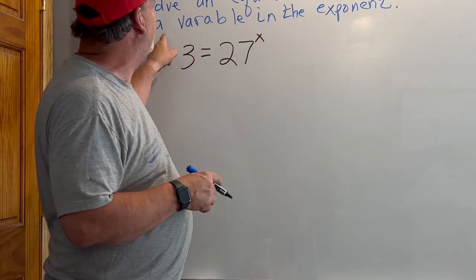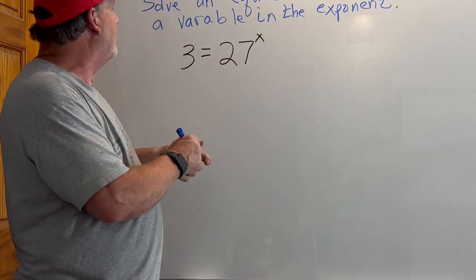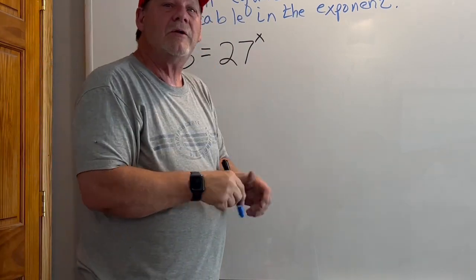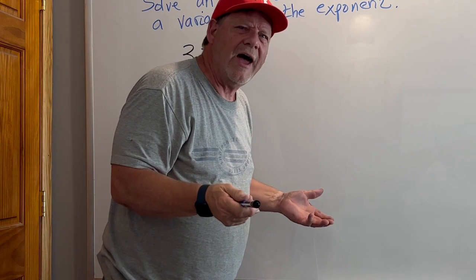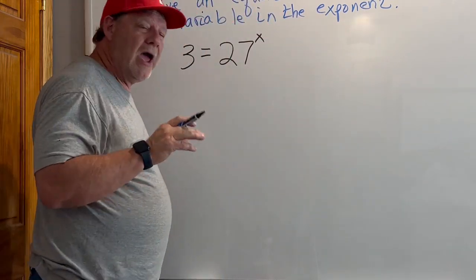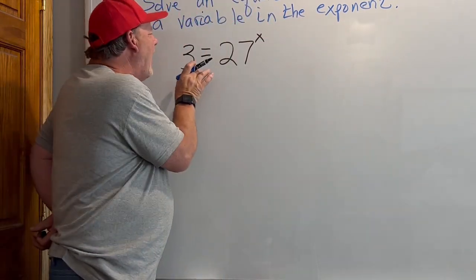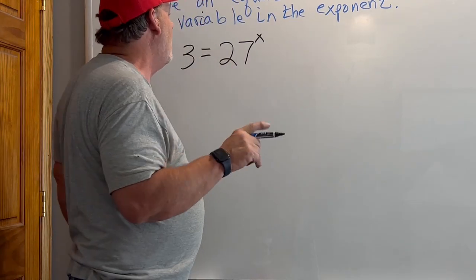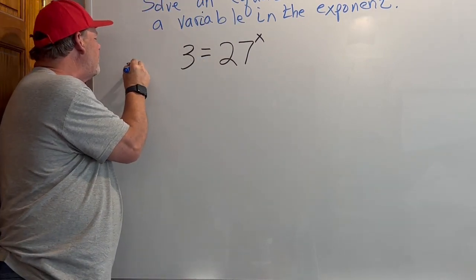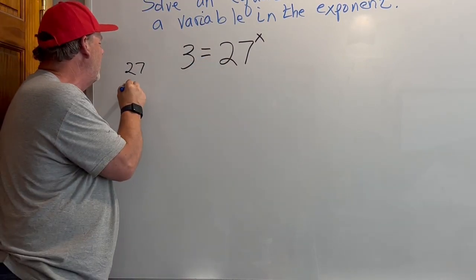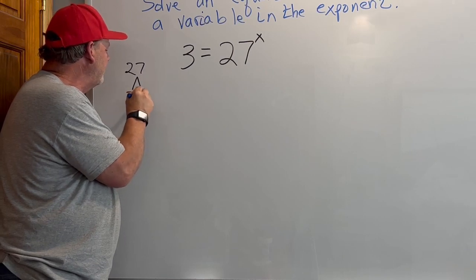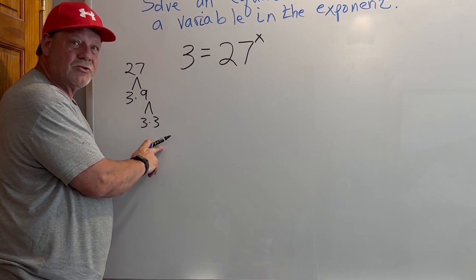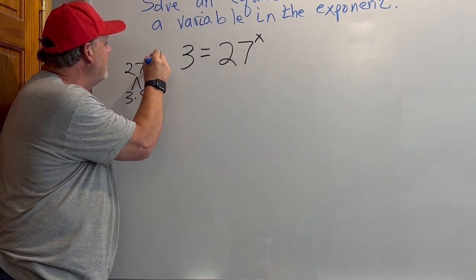If I want to solve an equation with a variable in the exponent, how do you solve that? What we have to do is figure out how to get the same base on both sides. One way to do that is to take your 27, the bigger number, and write the factors. See how it's 3 times 3 times 3? That means it's 3 to the third power.